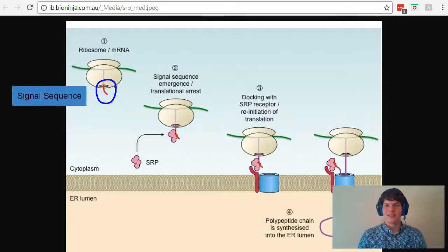This signal sequence will then attract what is known as a signal recognition protein. And this signal recognition protein will bind to the signal sequence and draw it over to a channel in the ER lumen, the endoplasmic reticulum. This will allow that protein to be translated right into the endoplasmic reticulum, where it will get packaged up and sent out of the cell.